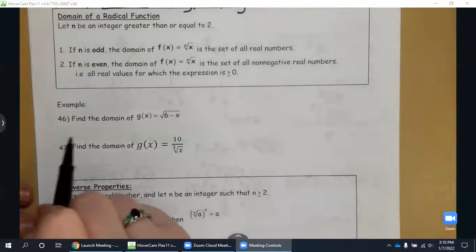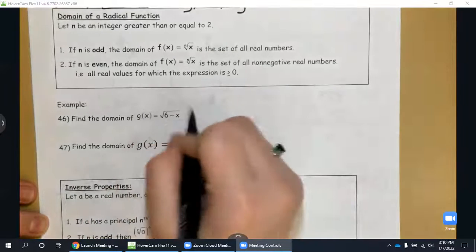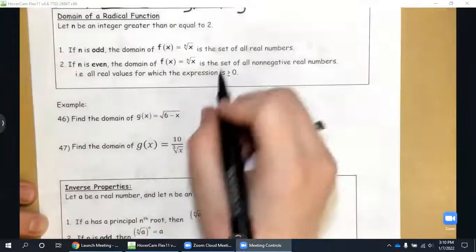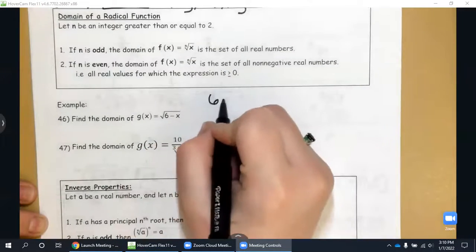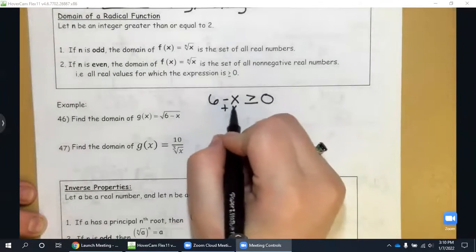So in 46, I have the square root, so that means that what's inside my radical has to be greater than or equal to zero. So to find the domain, I'm going to set six minus x greater than or equal to zero, and we're going to rearrange this to solve for x. So I can add x to the other side.